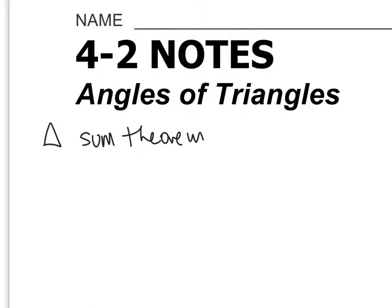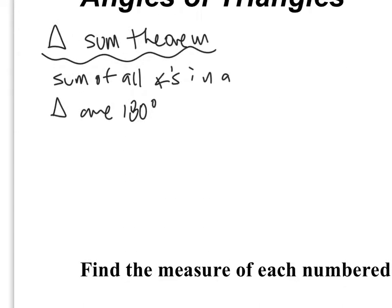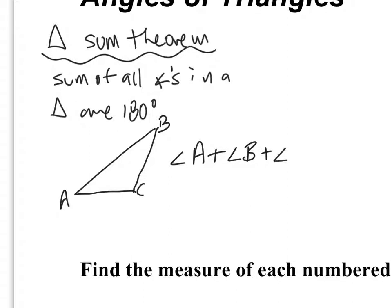The Triangle Sum Theorem means that the sum of all angles in a triangle is 180 degrees. So if you add the angles in a triangle, they will always add up to 180 degrees. If I were to draw a generic triangle and call it triangle ABC, I would say that angle A plus angle B plus angle C adds up to 180 degrees.